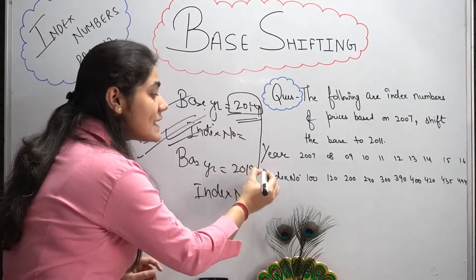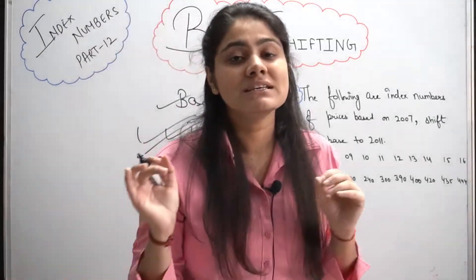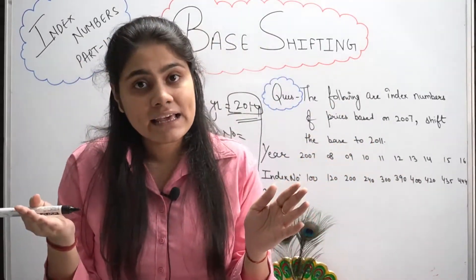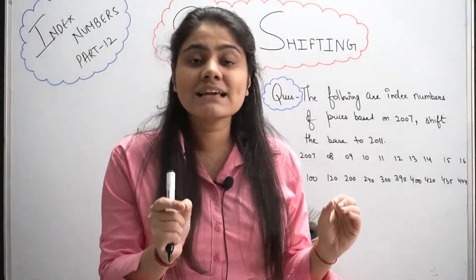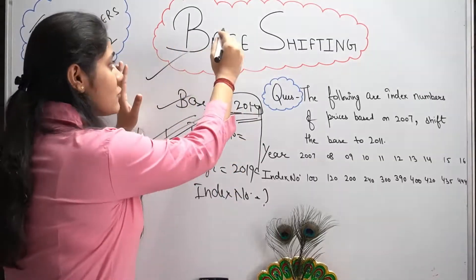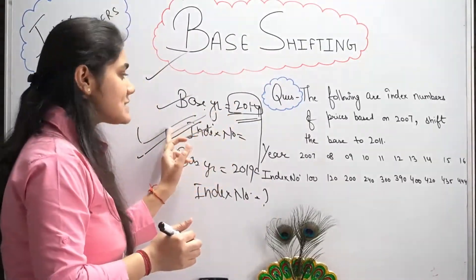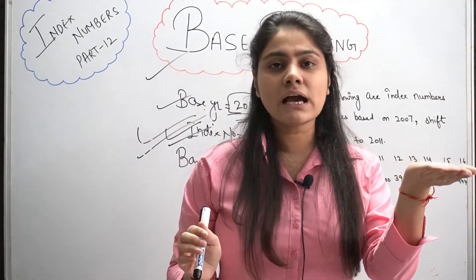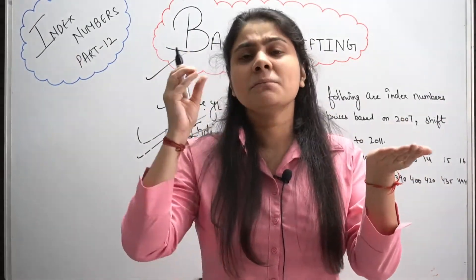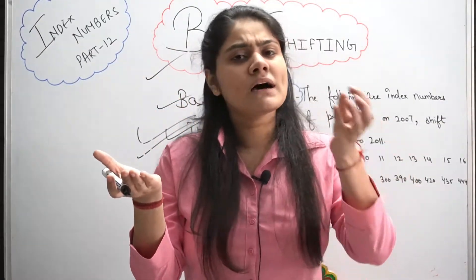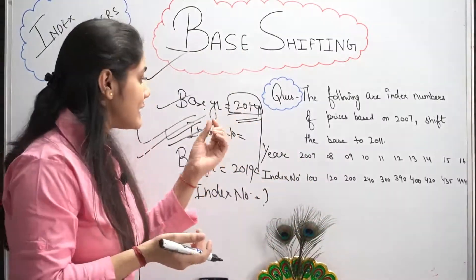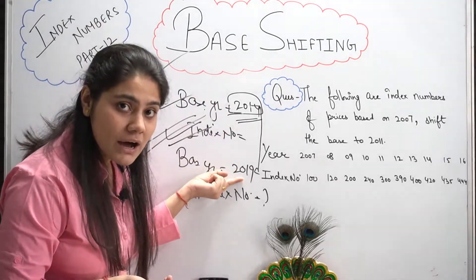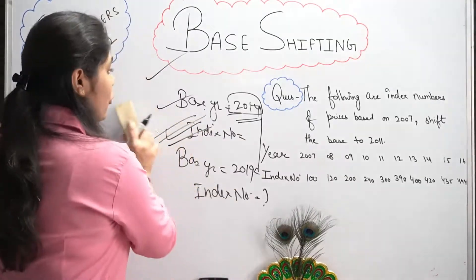आज की class में सीखेंगे कि अगर base change हो जाए, हमारा base year change हो जाए, तो index number क्या आएंगे — वो पूरी बड़ी calculation करके कैसे निकालें यह हम सीखेंगे। Base shifting का मतलब सिर्फ base year change कर रहे हैं और हमें नए index number निकालने हैं। पहले base year 2014 दिया था, अब base year 2019 दे दिया, तो 2019 के लिए दुबारा इतनी मेहनत करने की ज़रूरत नहीं है।